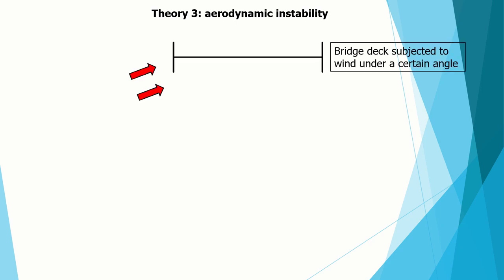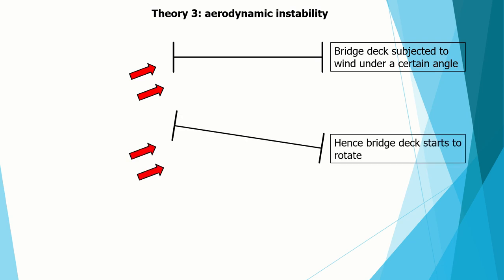The last and most important theory is aerodynamic instability. The simplified bridge deck is subjected to wind under a certain angle, causing it to want to rotate. As it rotates back, the wind amplifies the motion again. Due to these rotations, more and more energy is built up inside the bridge deck — this is essentially negative damping, where the motion is enlarged due to its own motion. Hence the term aerodynamic instability.